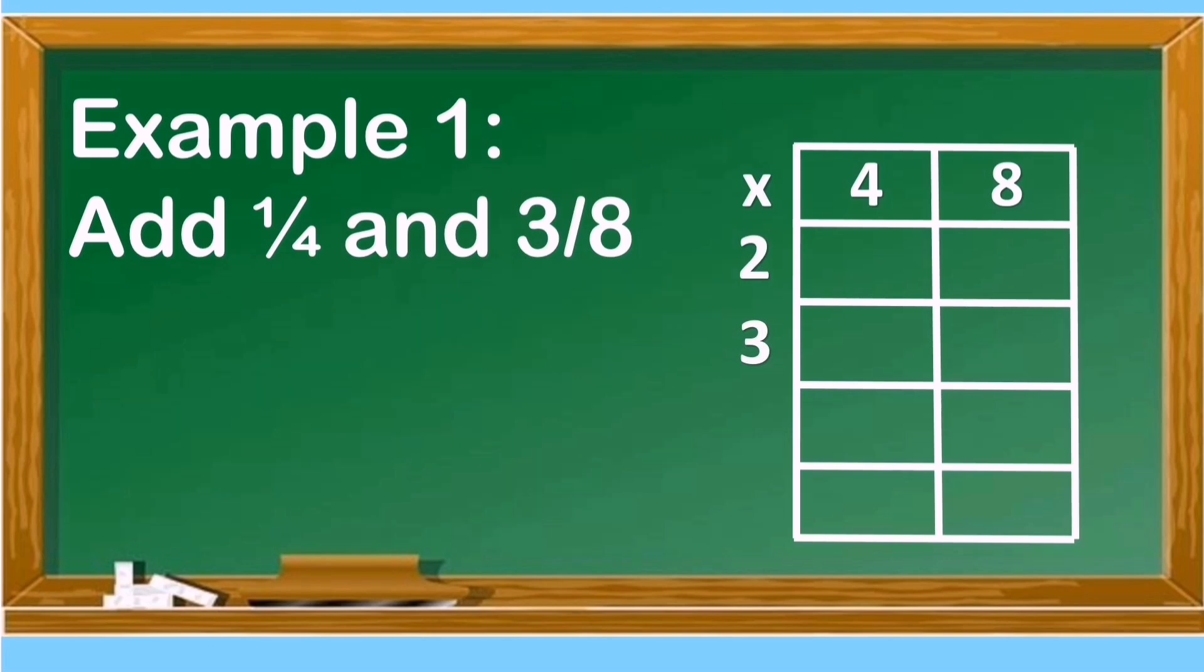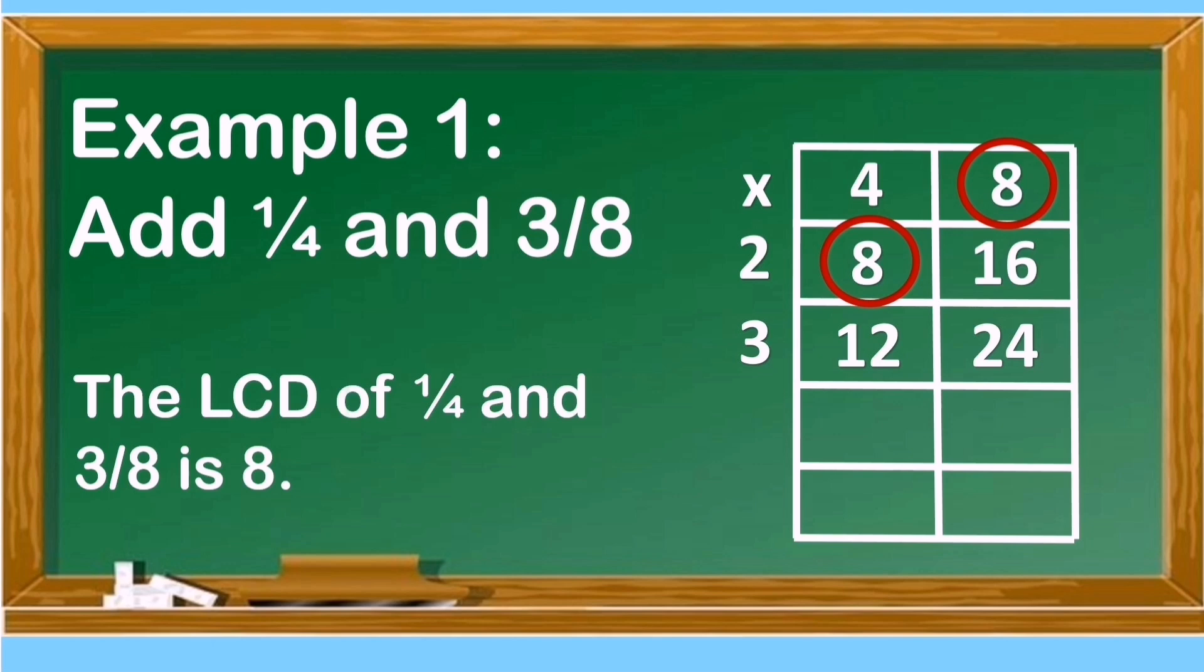2 times 4 is 8, 2 times 8 is 16, 3 times 4 is 12, and 3 times 8 is 24. Now we can identify the least number that is common to both of them, and that is 8. The LCD of 1/4 and 3/8 is 8.